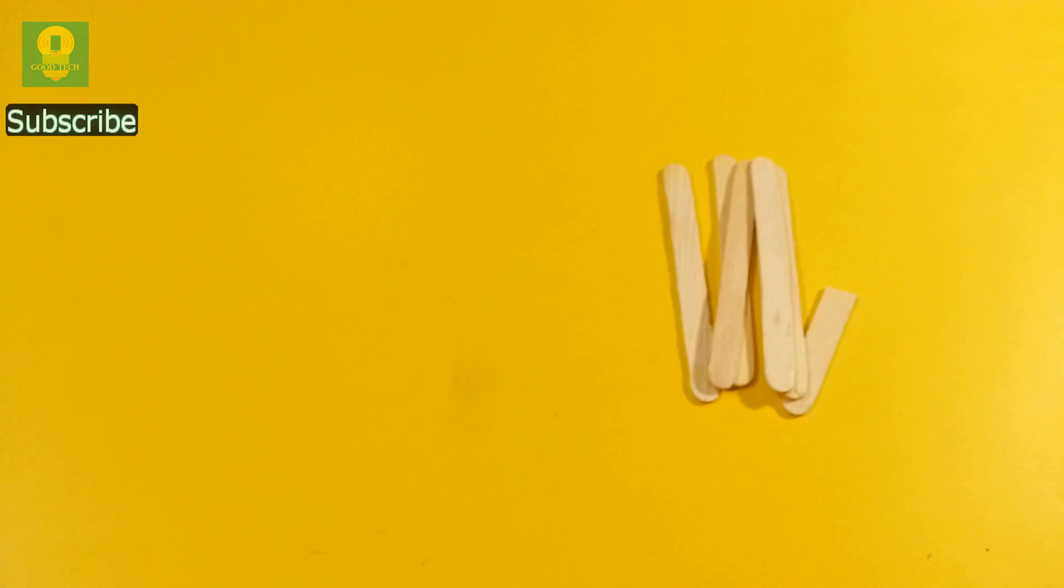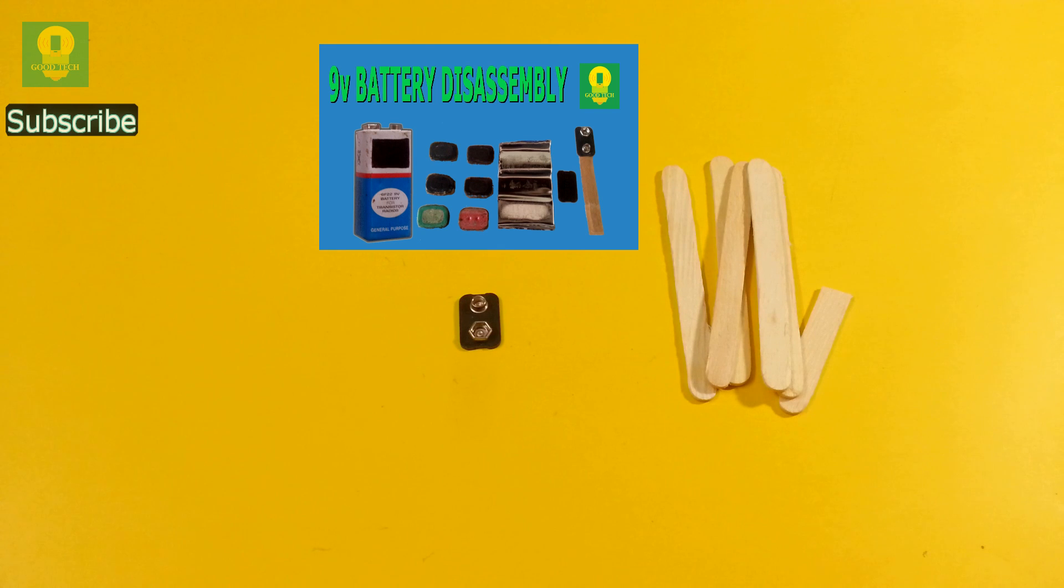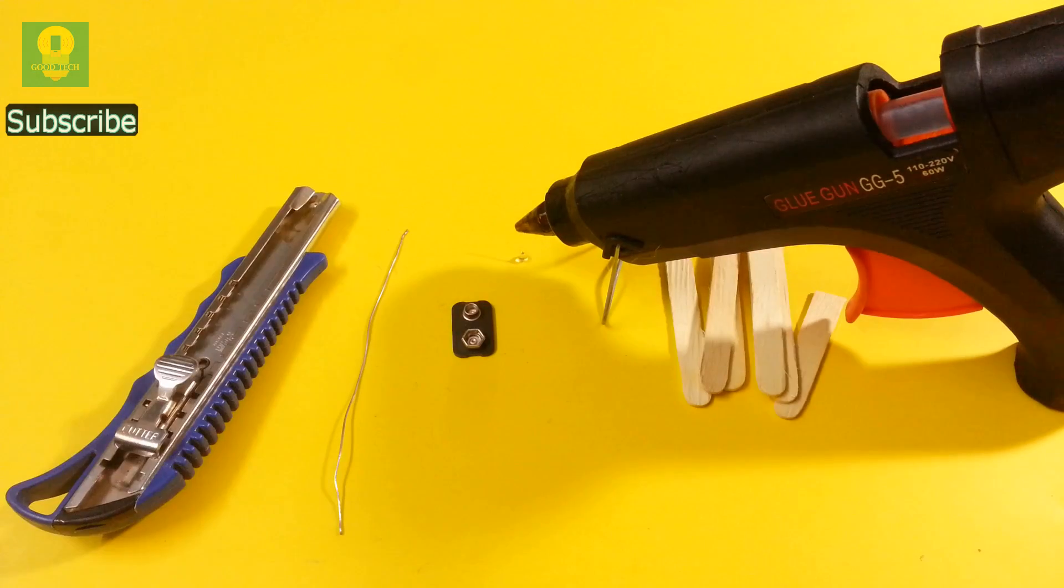To make this holder we need few ice cream sticks, a battery connector clip, you can also watch my video to get this connector from an old 9V battery, hard wire, glue gun and a knife.